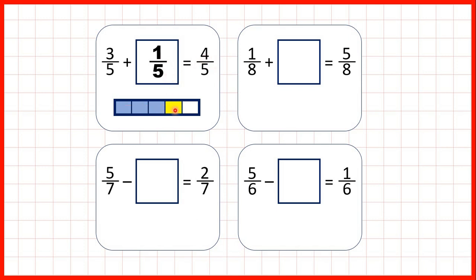1/5 of our fraction bar is yellow. That makes sense because whenever we have a missing number addition, we can use subtraction to find our missing number. Notice that 4/5 — if we start with what's coloured in and take away 3/5, so take away what's coloured in blue — gives us our missing fraction: the 1/5 that we have in yellow.